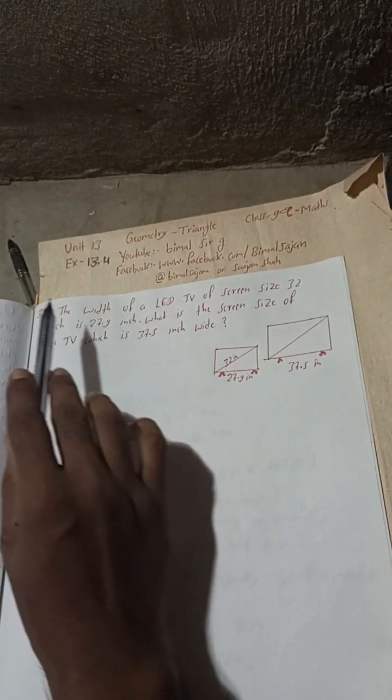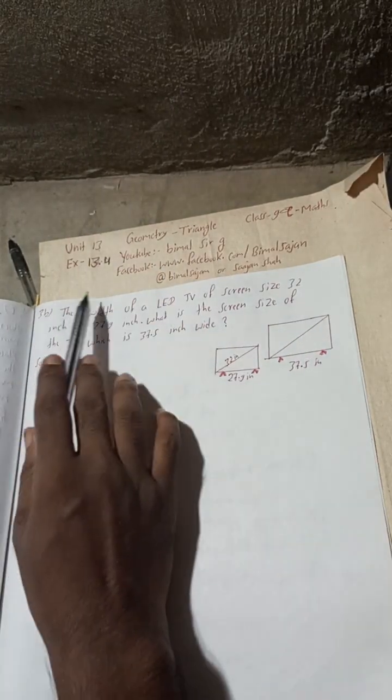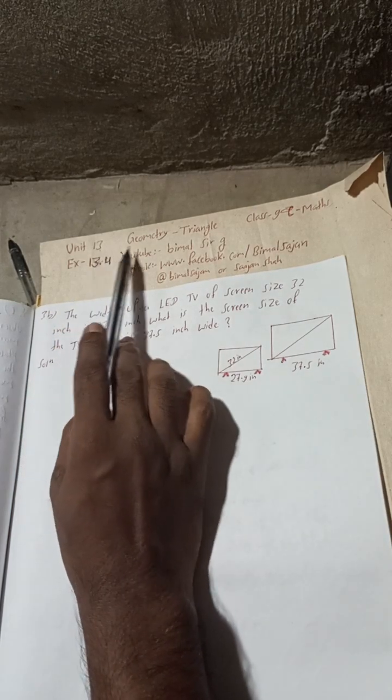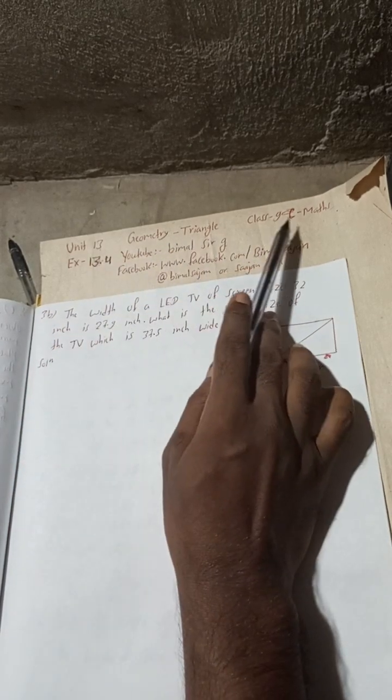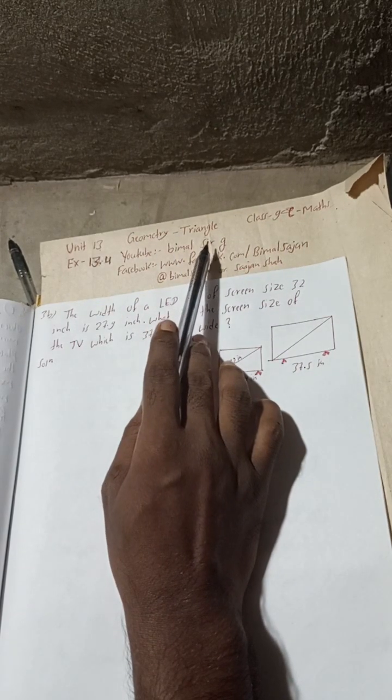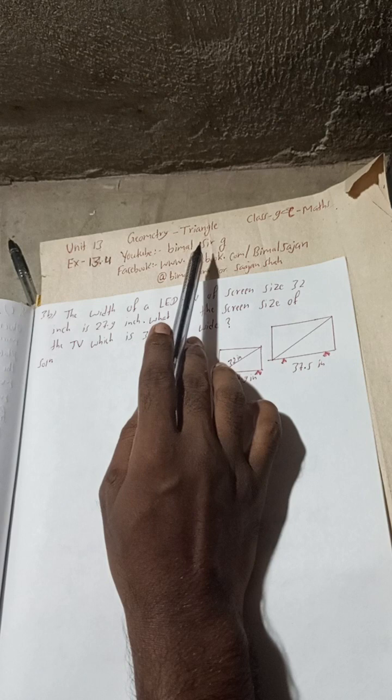Radhe Radhe, Jaya Shri Krishna. Class 9 and 10 students, welcome back to question number 3b, exercise 13.4, unit 30 geometry triangle, class 9 compulsory maths. Check the playlist of this Vimal Saraji channel where you will find your class 9 and 10 solutions.